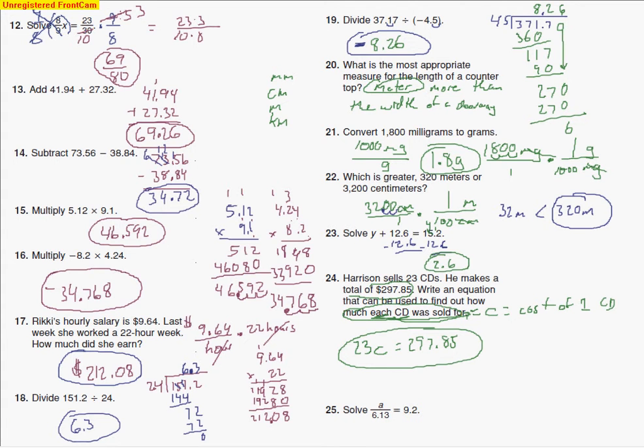Well, the last problem asks us to solve for A. So I'm going to use some multiplication, and I'm going to multiply by 6 and 1,300. That'll cancel out the 6 and 1,300 on that side. Do the same thing on this side. So when I do that, I've got to set up 9.2, and I'm multiplying by 6 and 1,300. So you just multiply. 2 and 3 make 6. 2 and 1 make 2. 2 and 6 make 12.